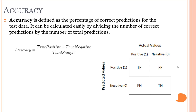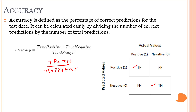The first metric is accuracy. Accuracy is the number of correct predictions made by our model divided by the total number of predictions. The correct predictions are true positives and true negatives, so accuracy equals TP plus TN divided by TP plus FP plus FN plus TN.